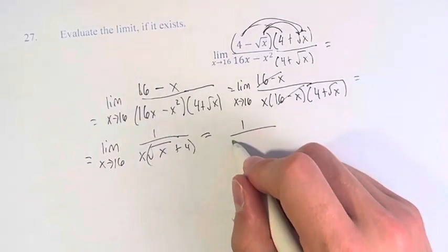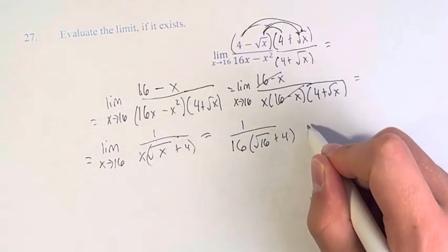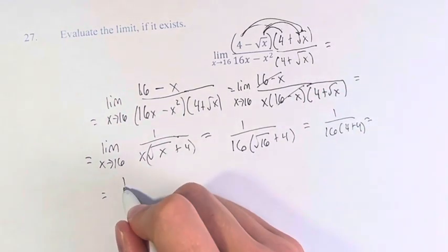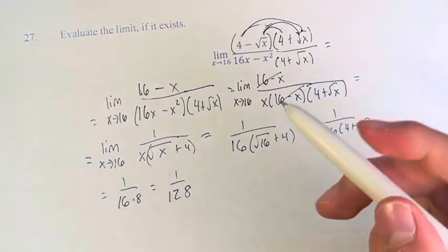And now we can plug in and we get 1 over 16 times the square root of 16 plus 4. This is 1 over 16 times 4 plus 4, 1 over 16 times 8, which is 1 over 128. Therefore, the value of this limit is 1 over 128.